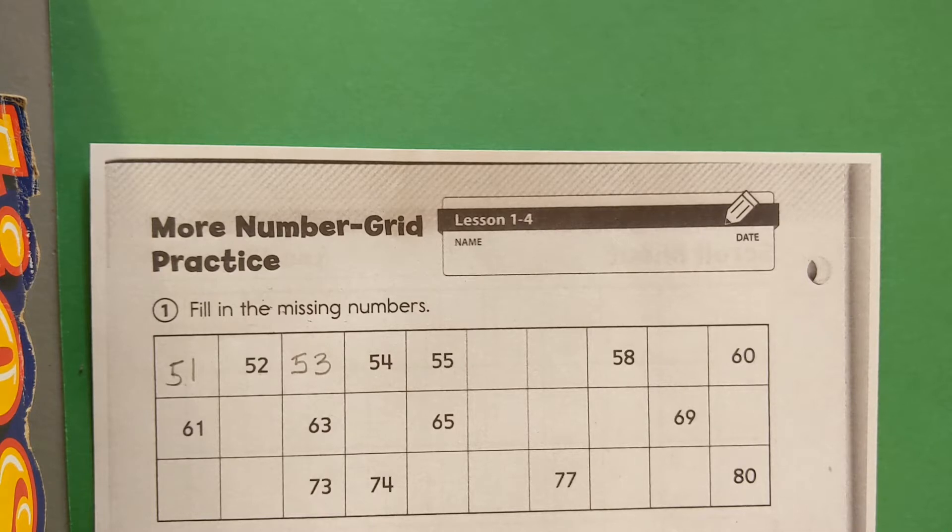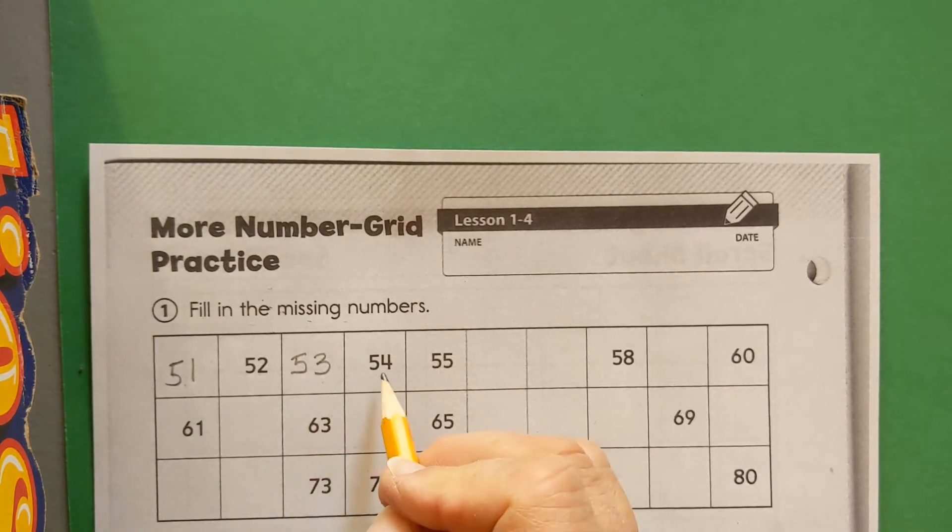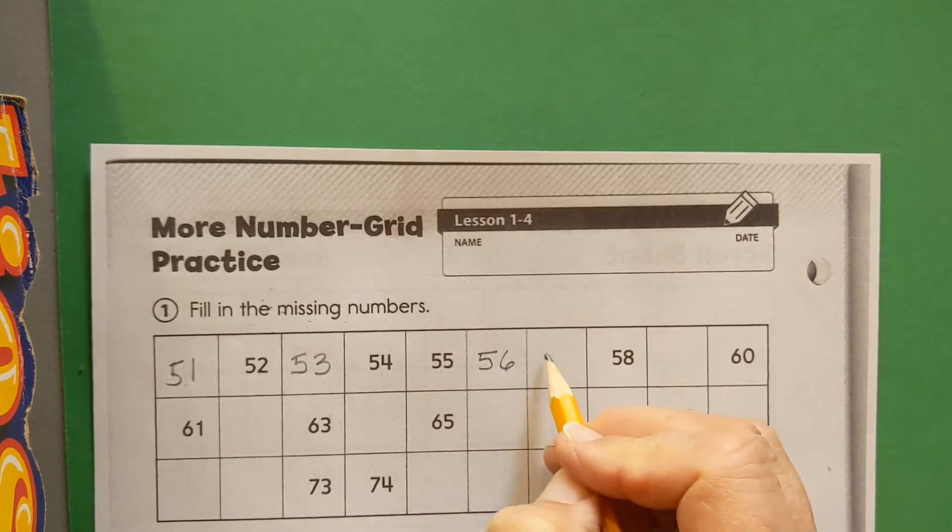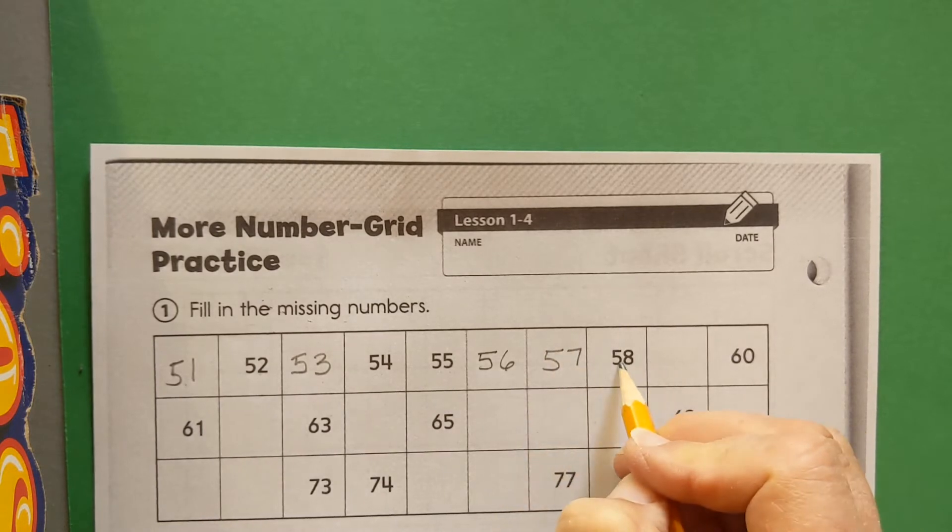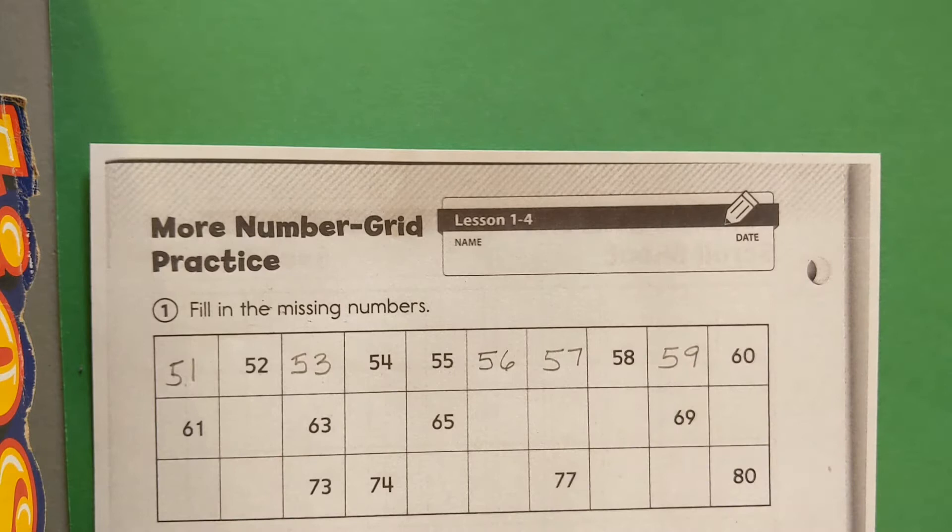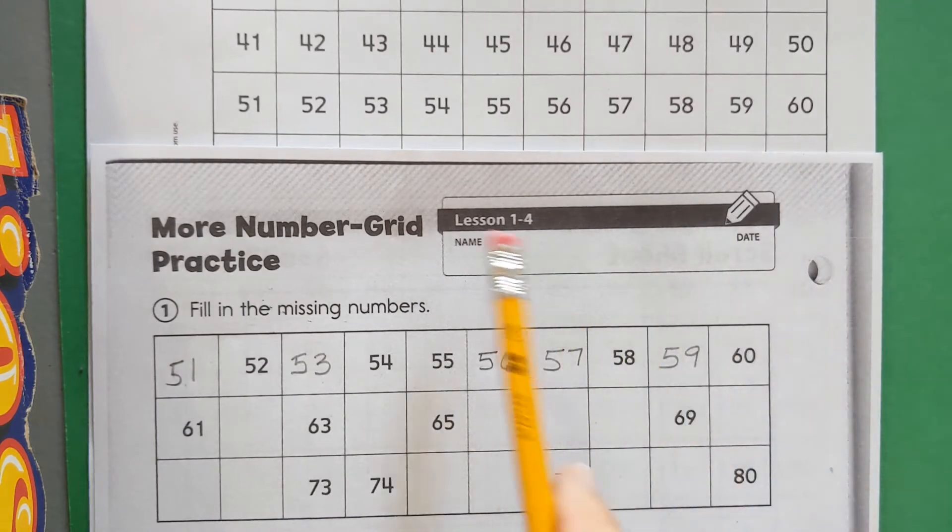All right, here we go: 53, 54, 55, 56, 57, 58, 59, 60. And look, you could just check your number grid. You don't even need me. Let's see, is that all right? Yes, it ends with 60.